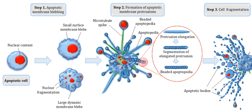Genes involved in controlling cell death encode proteins with three distinct functions. Killer proteins are required for a cell to begin the apoptotic process. Destruction proteins do things such as digest DNA in a dying cell. Engulfment proteins are required for phagocytosis of the dying cell by another cell. Cleavage of chromosomal DNA into smaller fragments is an integral part and biochemical hallmark of apoptosis.